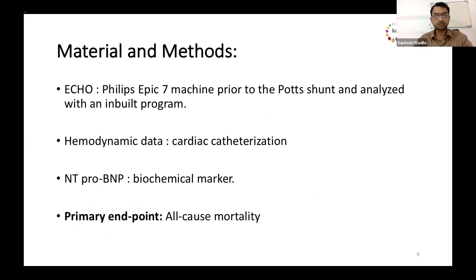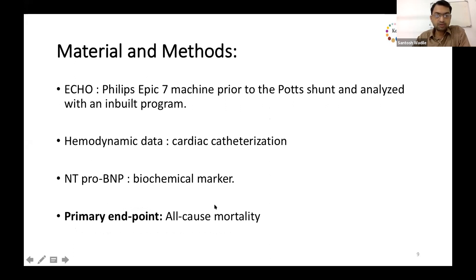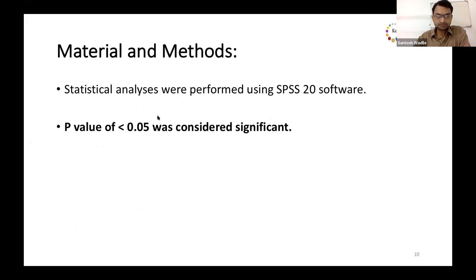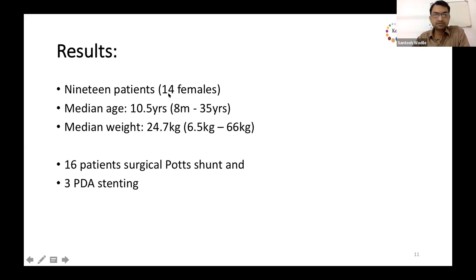Echo was done on a Philips EPIC 7 machine prior to the shunt and analyzed with the inbuilt program. Hemodynamic data was obtained by cardiac catheterization done within 24 hours of the echo. NT-proBNP was used as a biomarker. All-cause mortality was the primary endpoint. Statistical analysis was done with SPSS 20 software, and we defined a p-value of less than 0.05 as statistical significance.